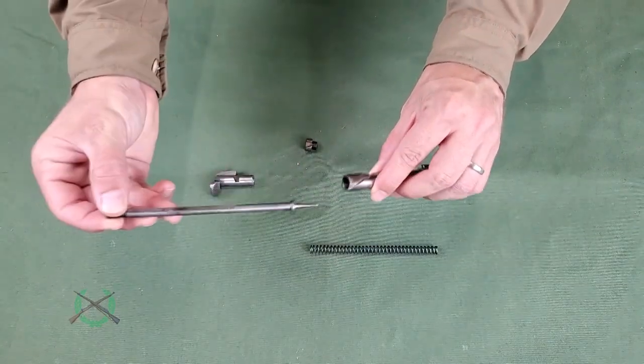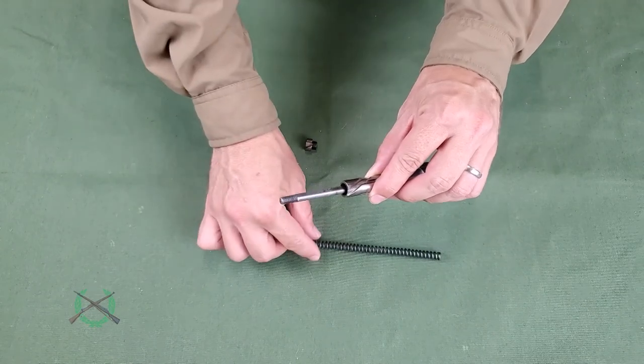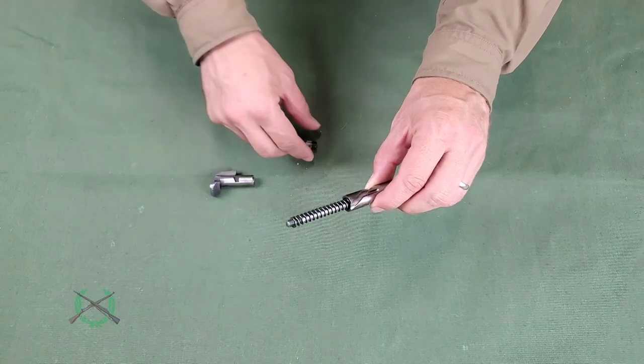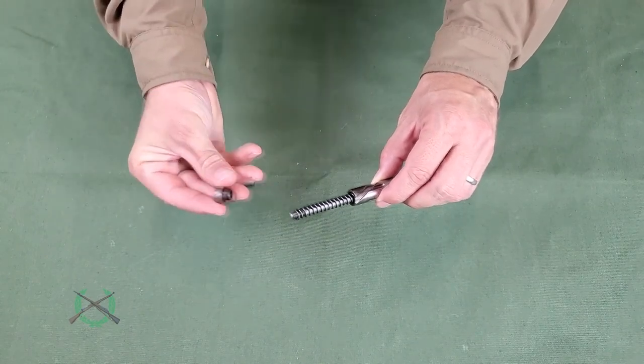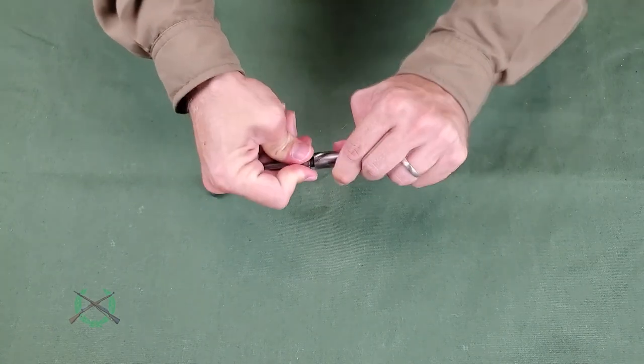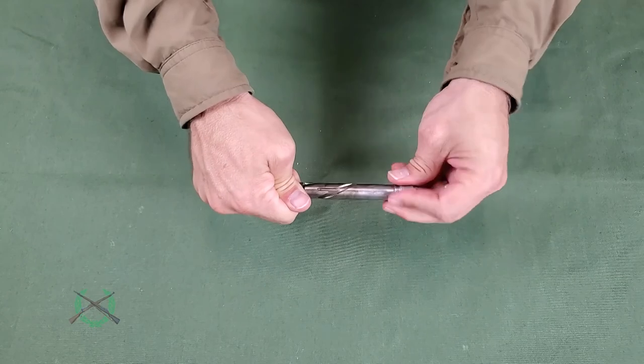Slide the firing pin into the back of the bolt head, then the firing pin spring over the firing pin. Compress the firing pin spring into the bolt head with the firing pin retaining nut over the firing pin and screw it into the bolt head by rotating it clockwise.